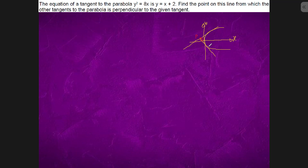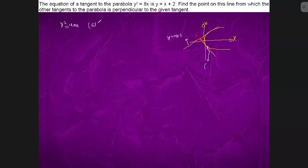Can we do one thing? This is the given equation of the given tangent, which is y = x + 2. We will take this point in parametric form. If we have y² = 4ax, the parametric form is (at², 2at). In the given equation we have y² = 8x, so a = 2. The point will come out to be (2t², 4t).